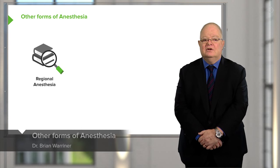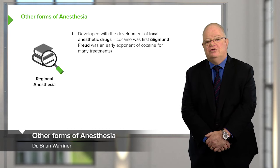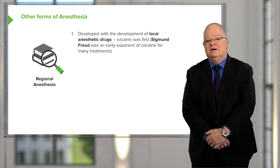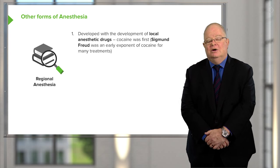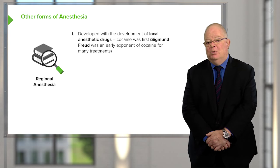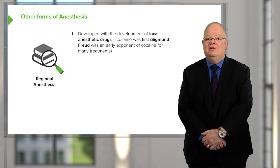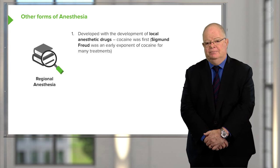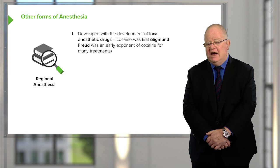Other forms of anesthesia that have developed include regional anesthesia, which developed as local anesthetics were created. One of the first people involved in this story was Sigmund Freud, who thought that cocaine would be both a useful medication and felt that it would be particularly useful in the treatment of depression.